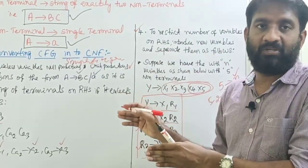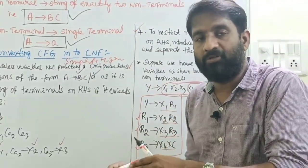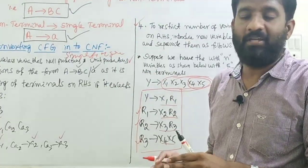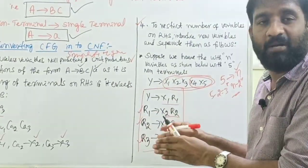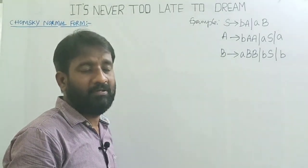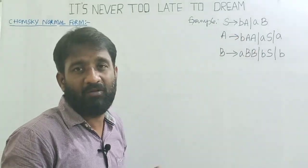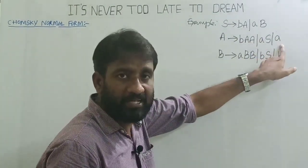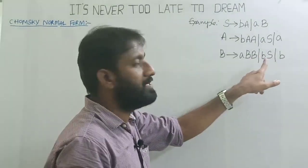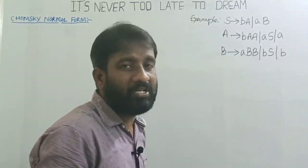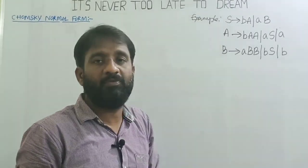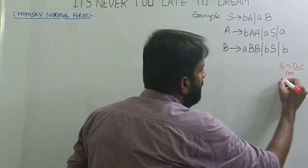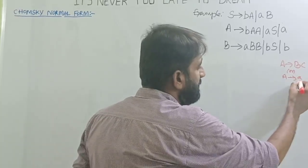Note that if a context-free grammar generates some language, then after converting it into Chomsky Normal Form, the CNF grammar also generates the same language — only then is the conversion correct. Now let's verify this procedure with an example. The given grammar is: S → BA | AB, A → BAA | AS | A, B → ABB | BS | B. We need to convert this context-free grammar into Chomsky Normal Form, where all productions must be of the form A → BC or A → a.